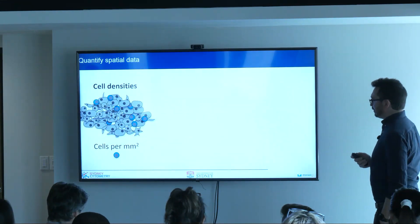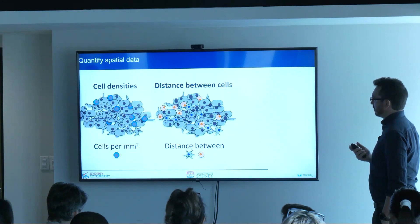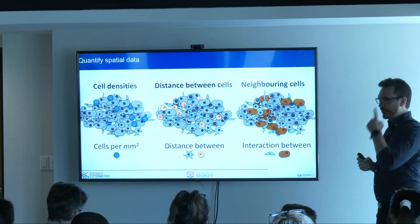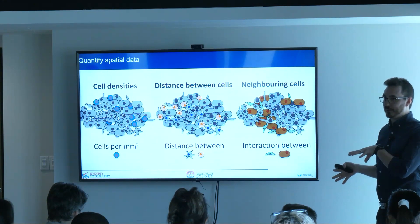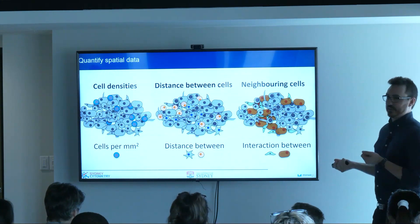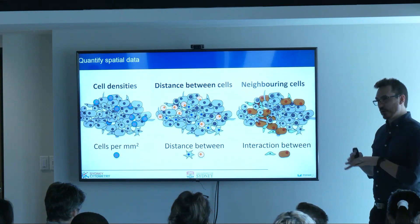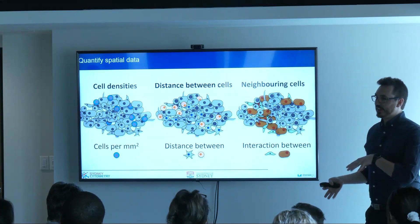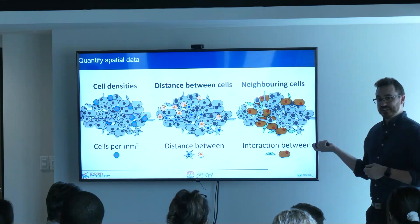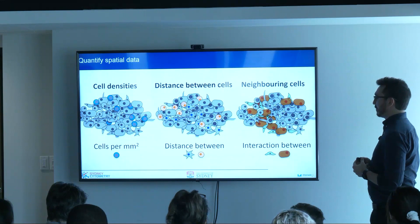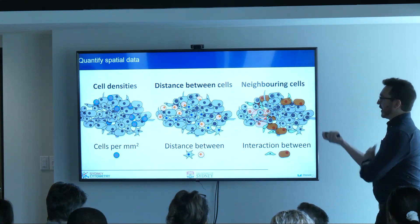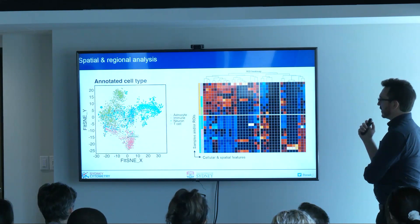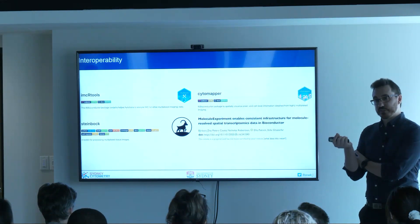In our toolkit, we do very simple metrics — nothing fancy like imputation or neighborhood prediction. We're basically just asking how many cells are in different areas and how close they are to the cells around them. It's low-ball stuff, but that was what we needed. If you're looking for low-ball calculations of spatial data, we have options here. If you want something fancier, there are other tools — which leads me to my next point: interoperability between tools is very important.